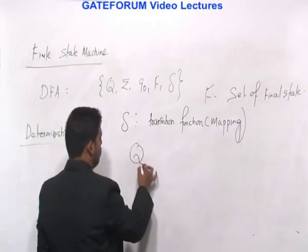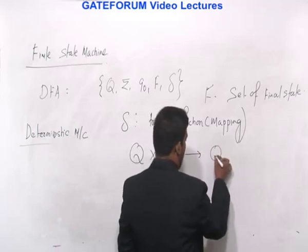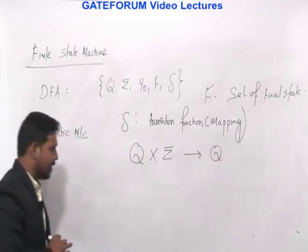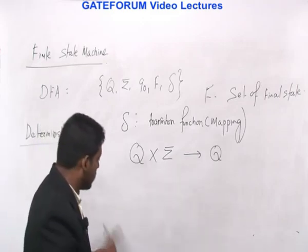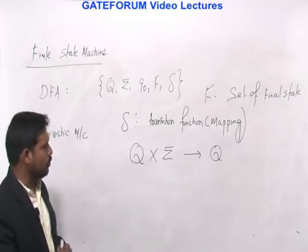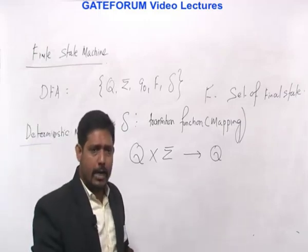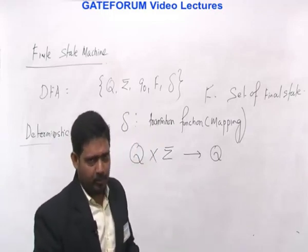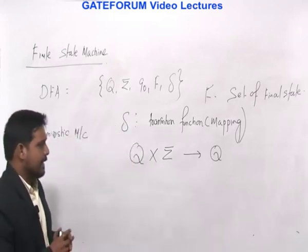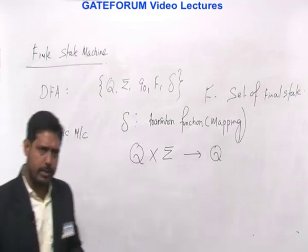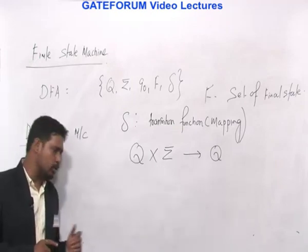Now, mapping for the transition function delta: a state cross an input symbol will be mapped to a next state. This follows the previous property — you will not draw two images for a single state. For a deterministic machine, if I give you Q0 as a state, there will be only one image — you will not write two images for Q0. And second, you will not skip Q0 on input A — if the state and input are given, there must be some mapping. Both violations make it not a function.